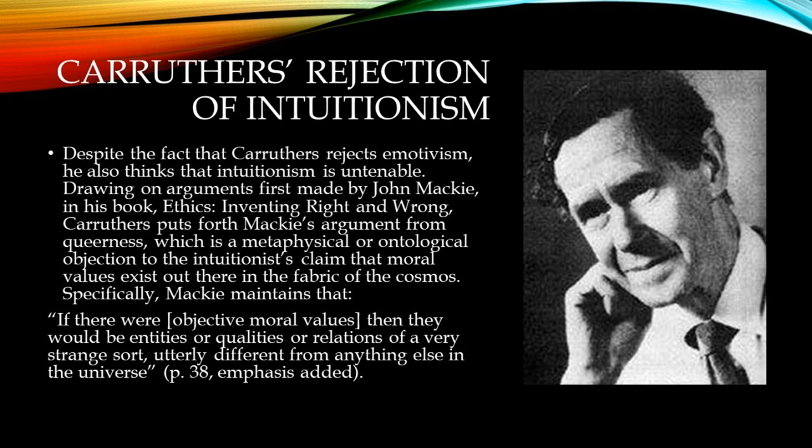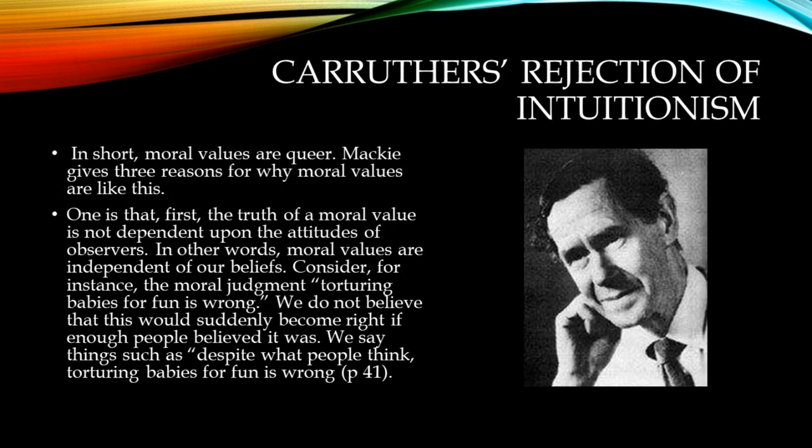Drawing on arguments first made by John Mackie in his book Ethics: Inventing Right and Wrong, Carruthers puts forth Mackie's argument from queerness, which is a metaphysical or ontological objection to the intuitionist's claim that moral values exist out there in the fabric of the cosmos. Specifically, Mackie maintains that moral values are queer. Mackie gives three reasons for why moral values are like this.